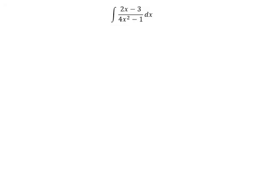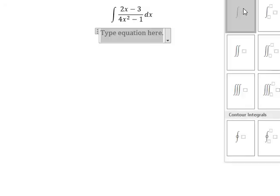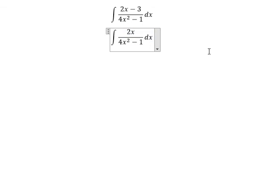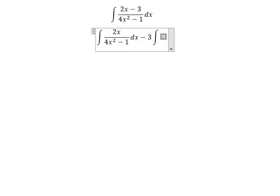We need to divide this integral into two integrals. The first one is 2s over 4s squared minus 1 dx. And the second one is negative 3 dx over 4s squared minus 1.